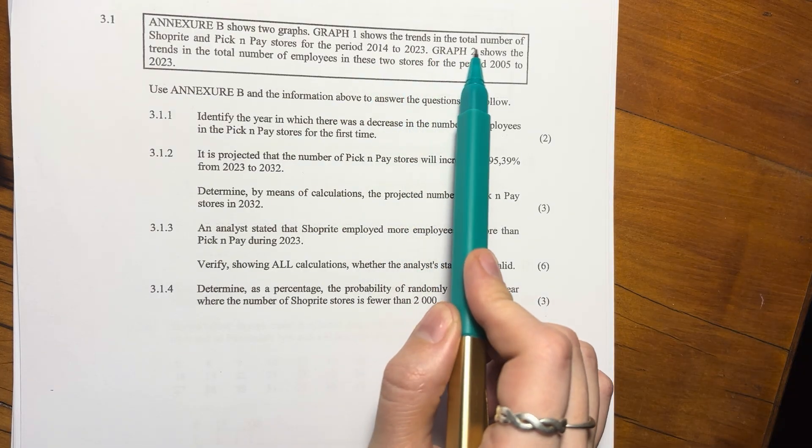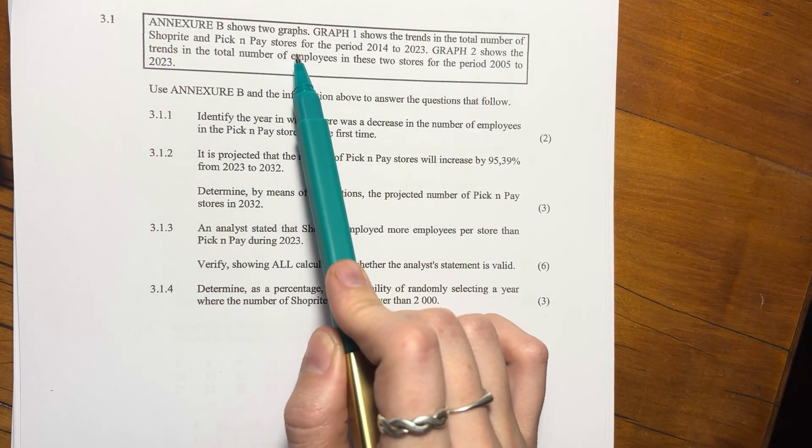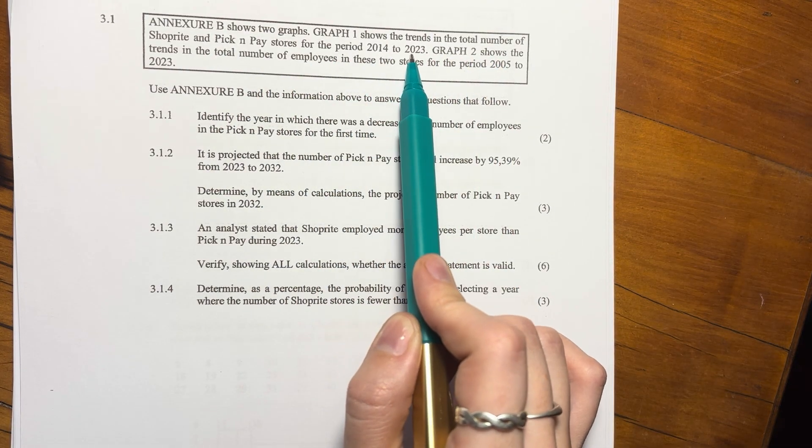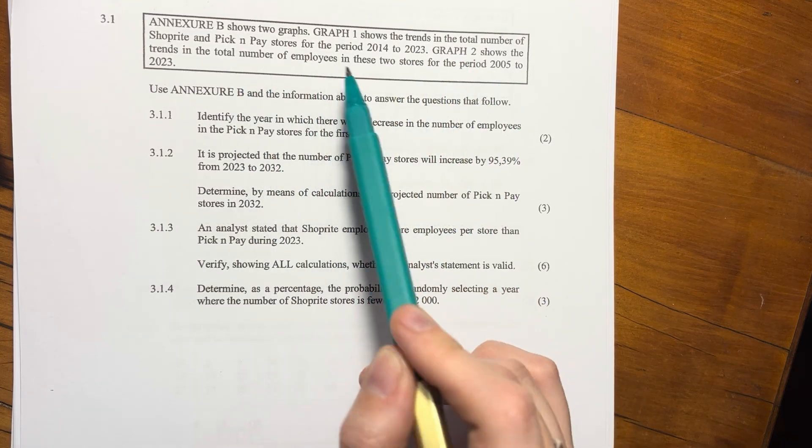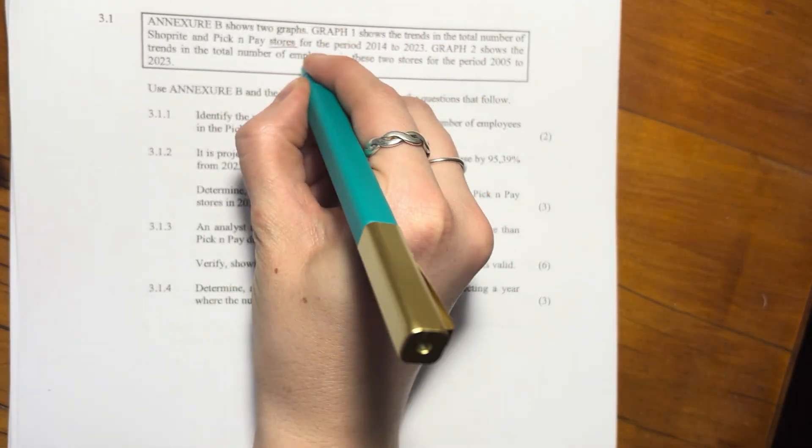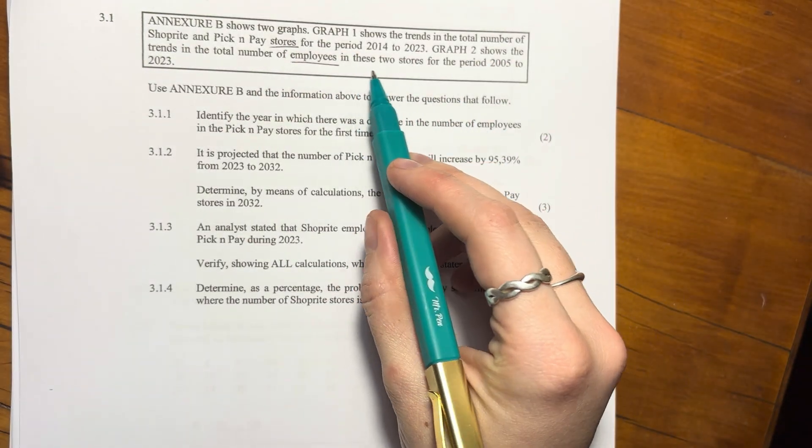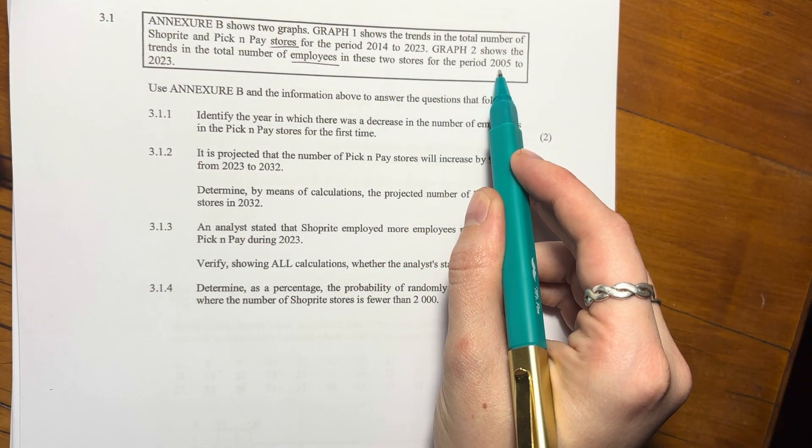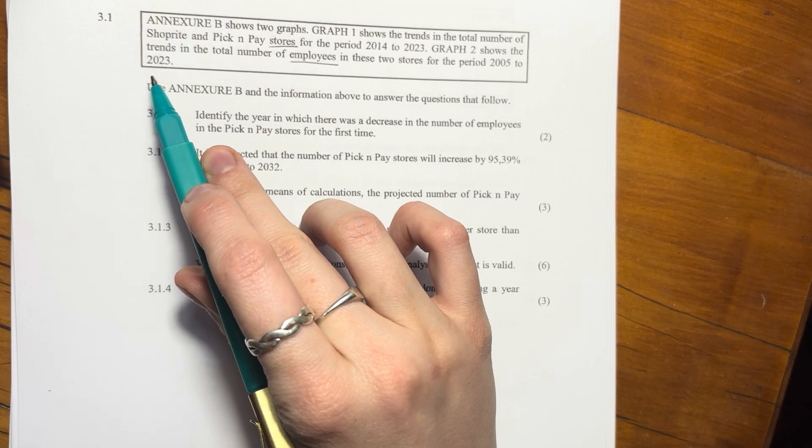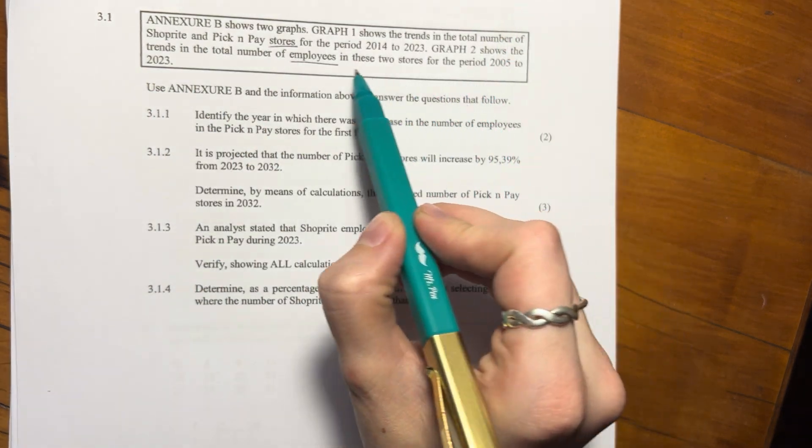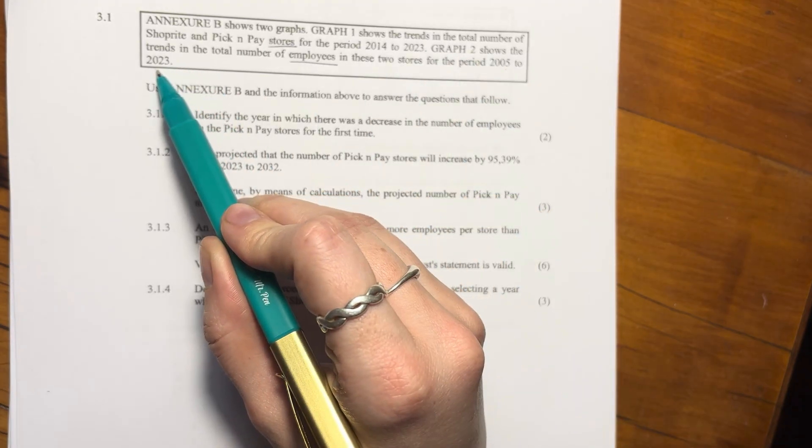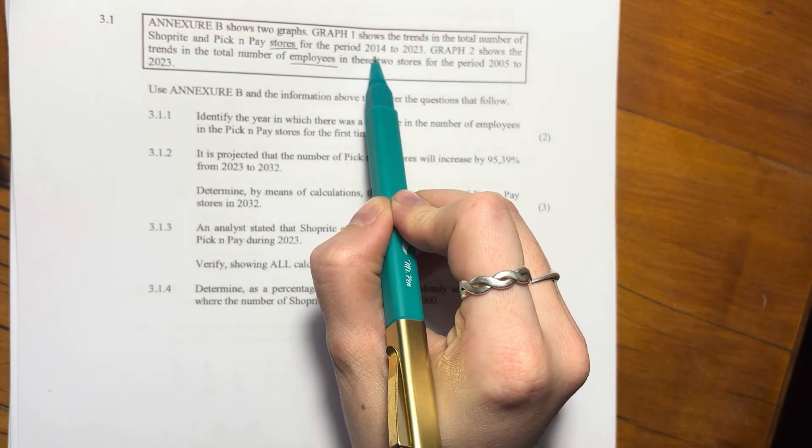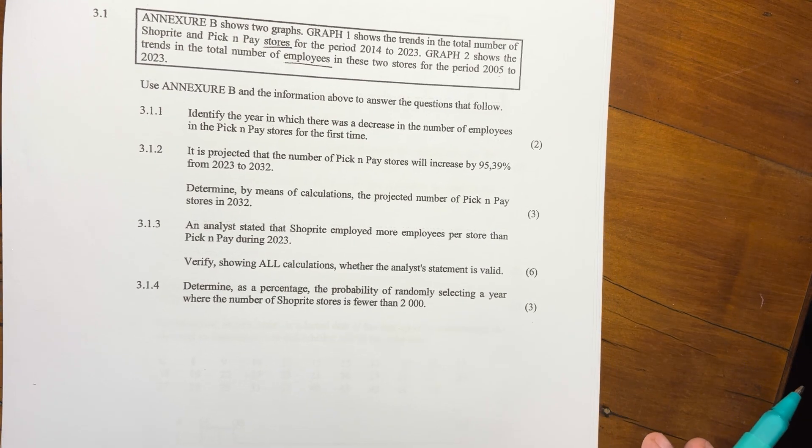Graph one shows the trends in the total number of ShopRite and Pick n Pay stores for the period 2014 to 2023. Graph two shows the trends in the total number of employees in the two stores for the period 2005 to 2023. So you can see that the employees graph is for a much longer time because it goes from 2005 to 2023, whereas the stores graph only goes from 2014. So just note that. But let's jump into the questions.